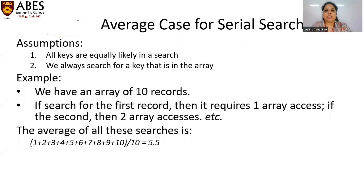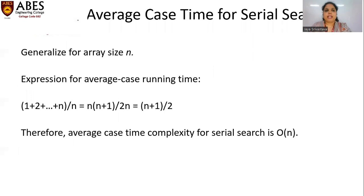For the average case of serial search, we assume all keys are equally likely in a search and that we always search for a key that is in the array. For example, with an array of 10 records, searching for the first record requires only one array access. The average of these searches is the sum of 1 through 10 divided by 10, which is 5.5. In general, for an array of size n, the average case running time is (1 + 2 + ... + n) / n, which equals (n + 1) / 2. Therefore, the average case time complexity of serial search is O(n).